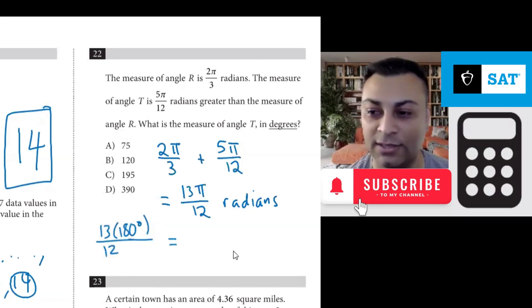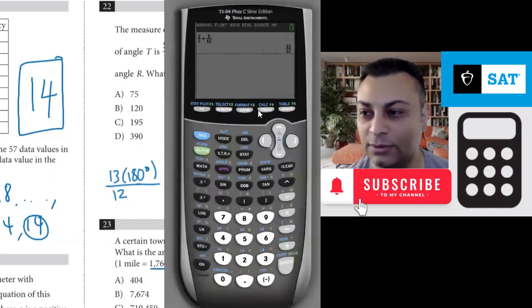Of course you can see that 13 over 12 is just more than 1, so the result will be just slightly larger than 180. But let's use the calculator of course. So here we go. 13 times 180 over 12.